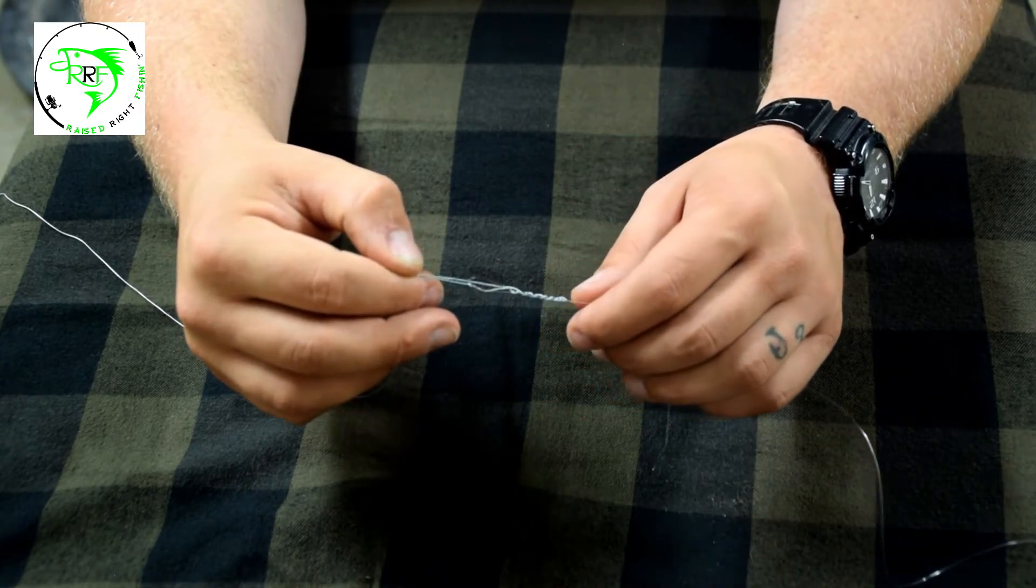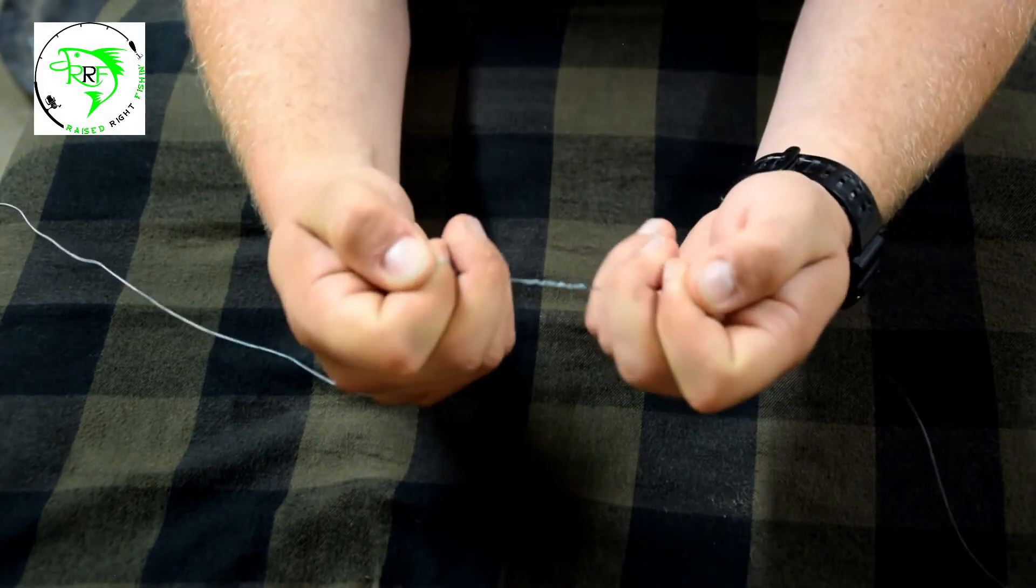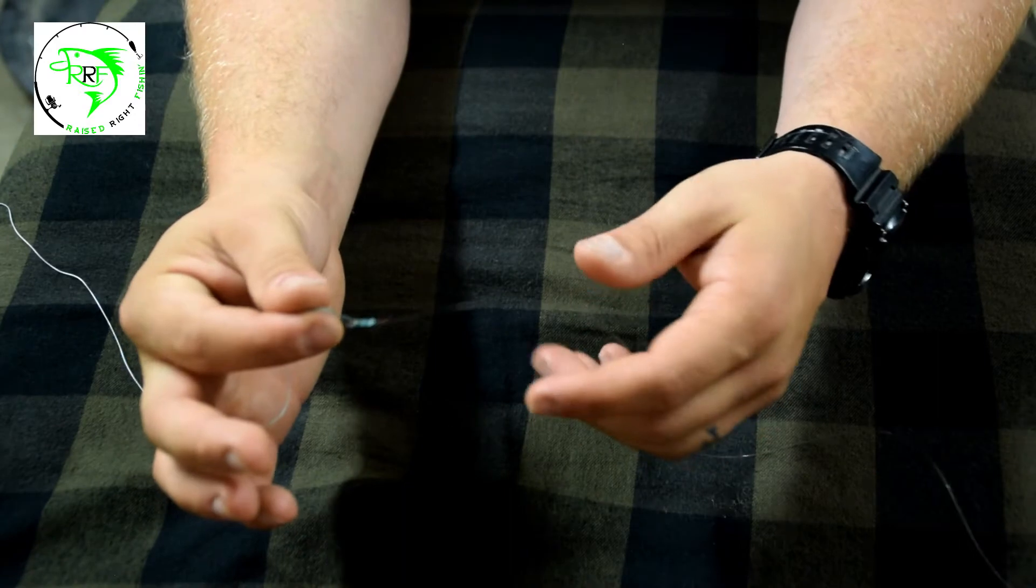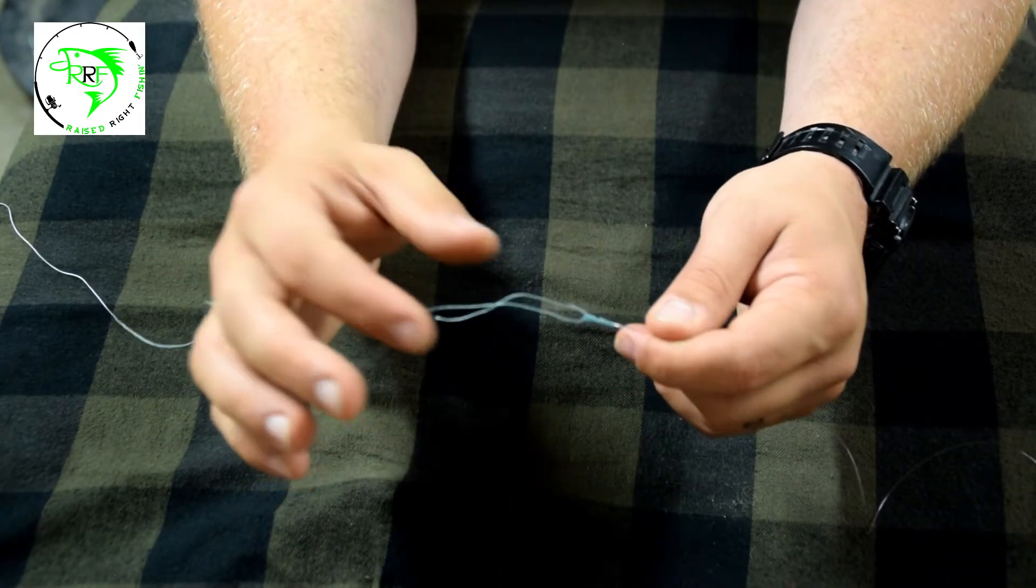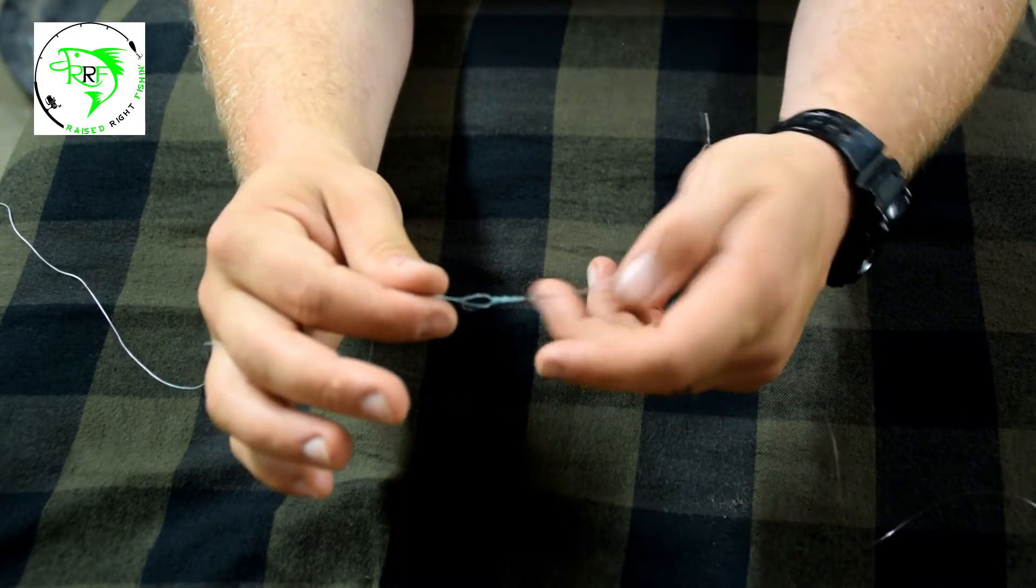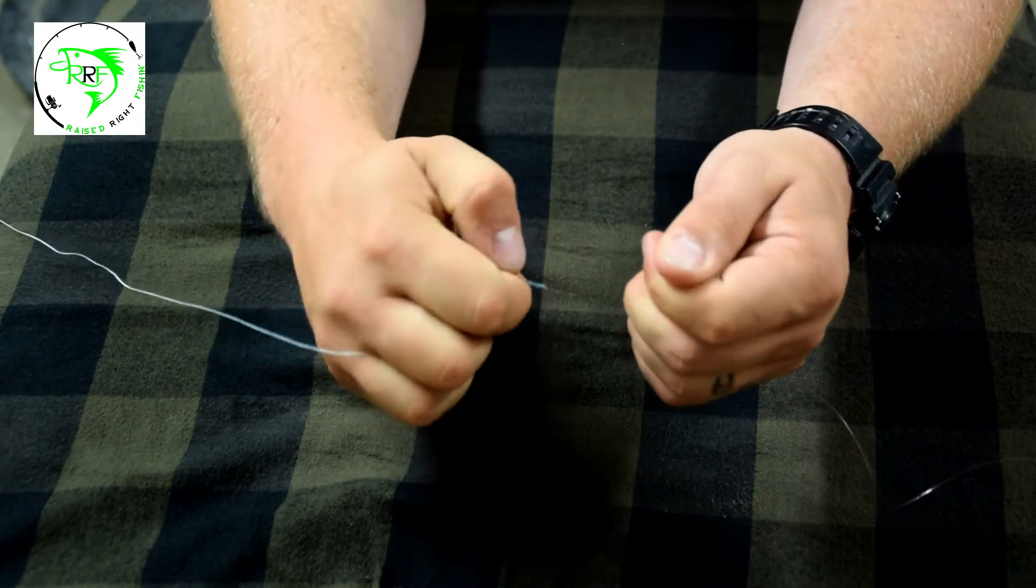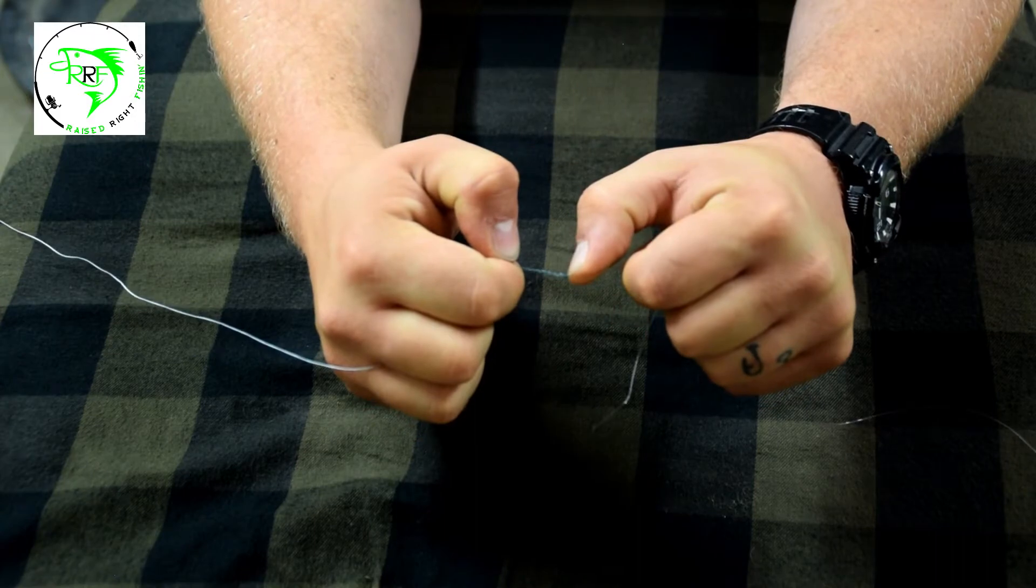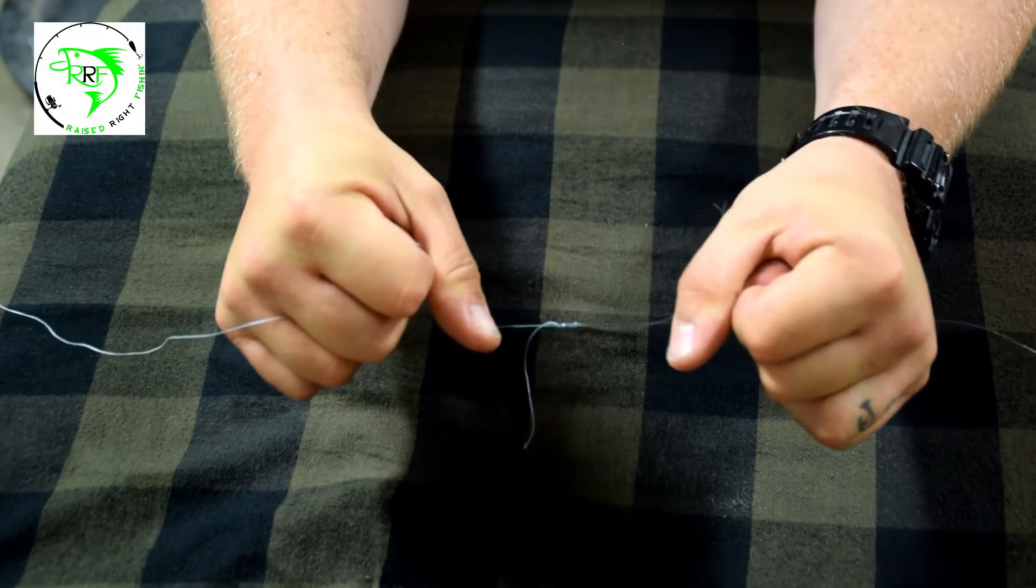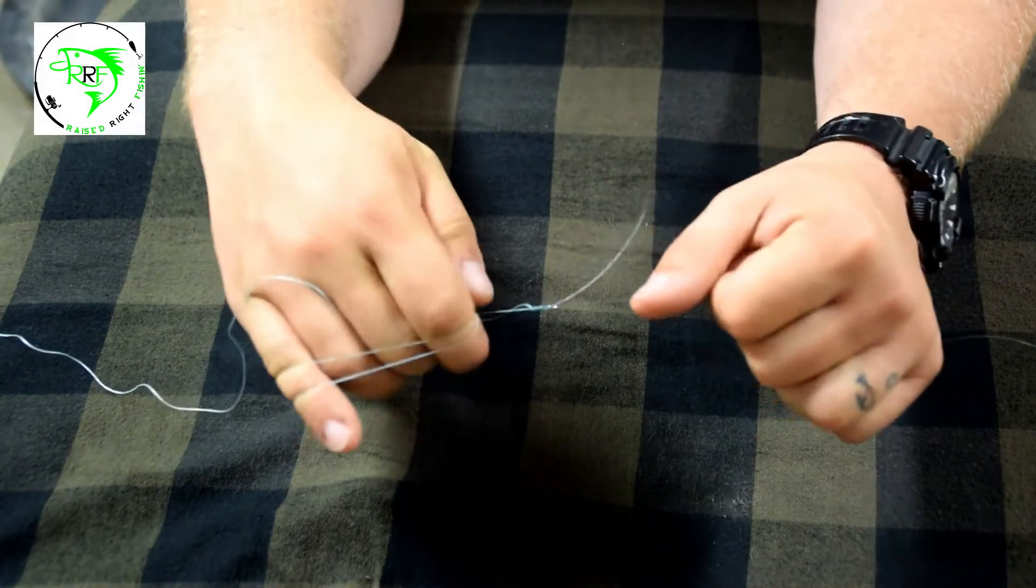Once you're at this point, just wet it, and then grab both the tail and the main line of both. You're going to grab tail tag and main line braid tag end and then leader line main leader material, and you're going to pull until you think you got it pretty good. Then release your tag ends on both sides and finish it up by just pulling the main line. If you're using braid, be careful and cut yourself.